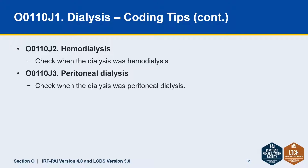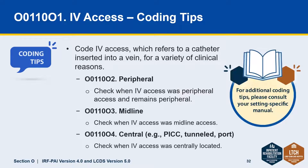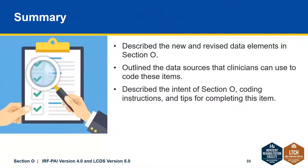Here you would indicate the type of dialysis as it pertains to the patient — so code J2 hemodialysis or J1 peritoneal dialysis. And just one last coding tip for IV access: indicate the type of access as it pertains to the patient. You would check O2 peripheral if the access was and remains peripheral, O3 midline, or O4 for central access such as a PICC line. To summarize, you should now be able to describe the new and revised data elements in Section O, outline the data sources you can use to code these items, and describe the intent of Section O as well as many of the tips to help you in completing this item.